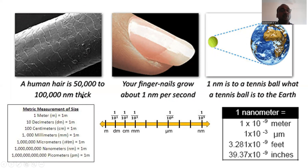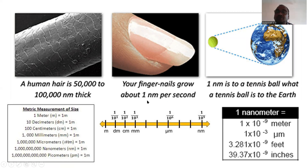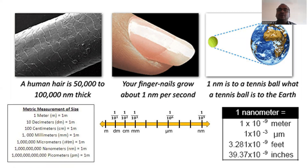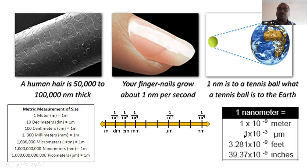A human hair is around 50,000 to one lakh nanometers in thickness. And your fingernail grows about one nanometer per second. One nanometer is like a tennis ball compared to the entire globe — just imagine. One meter equals 10 decimeters. One nanometer is equal to 1 into 10 to the power of minus 9 meters.